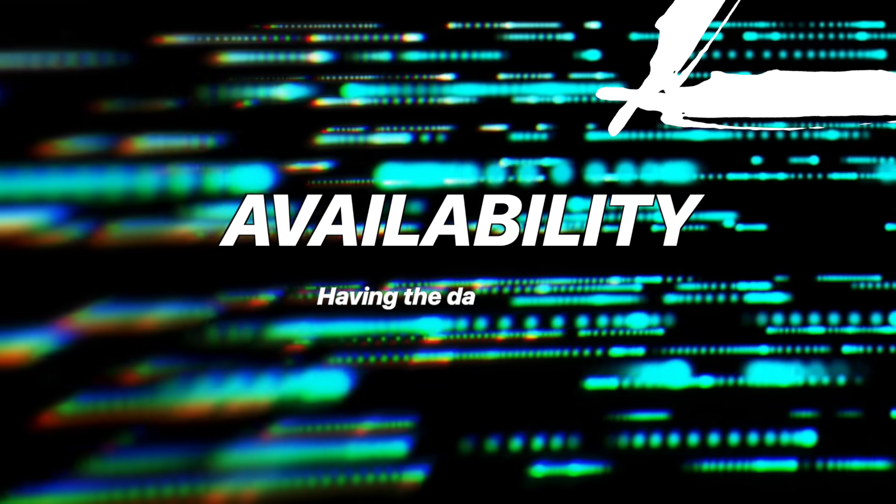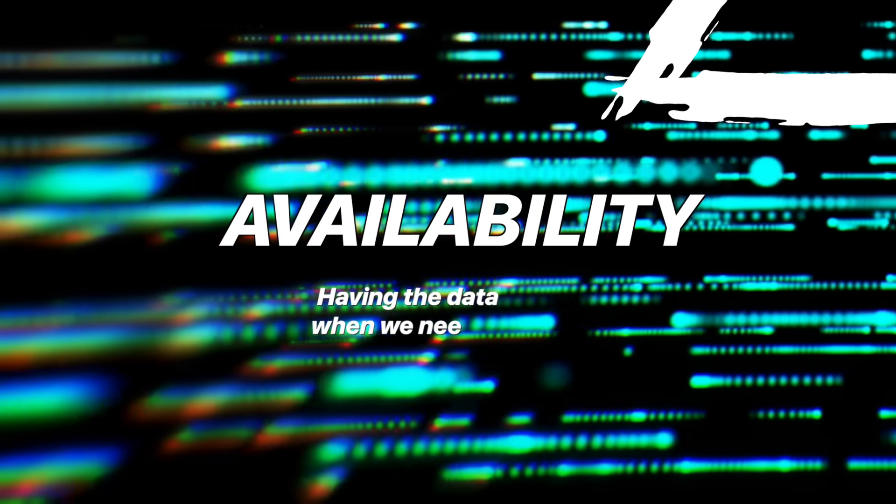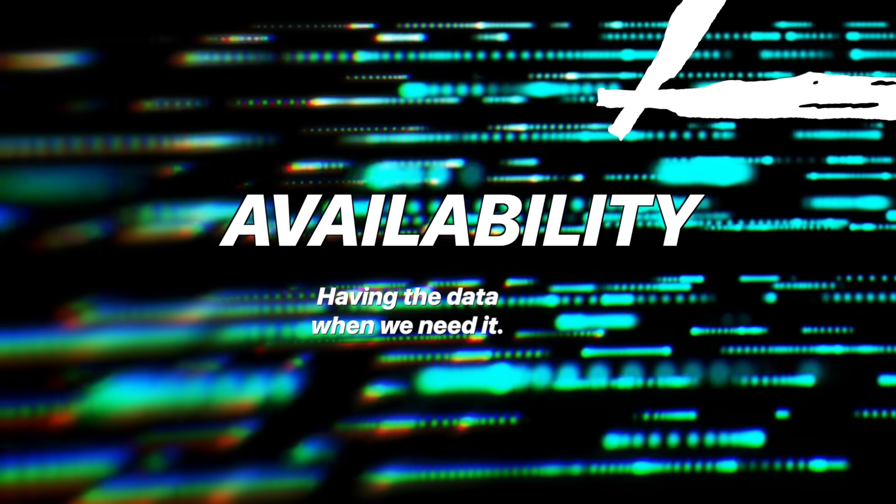Availability is our third objective, and this one means having the data when we need it — it's as basic as it sounds. Ransomware and denial-of-service attacks are both malicious attacks designed to compromise availability. Now that we understand these three core objectives, how can these privacy vaults help us out?